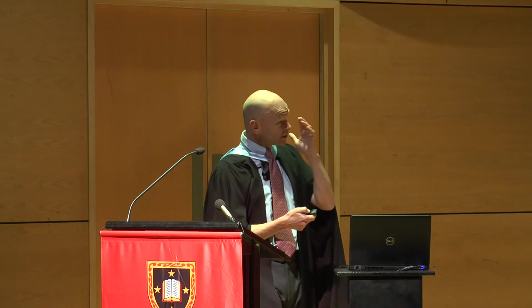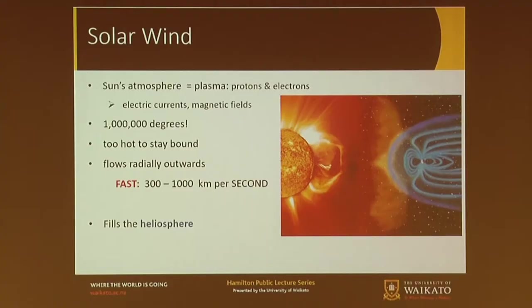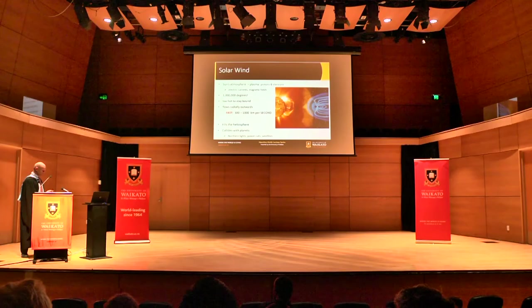That wind just keeps going. It fills the whole solar system — we call it the heliosphere. There's also space weather to discuss. The stuff that looks like it's coming off the sun — it is. It can collide with the planets, and we'll talk about that shortly.